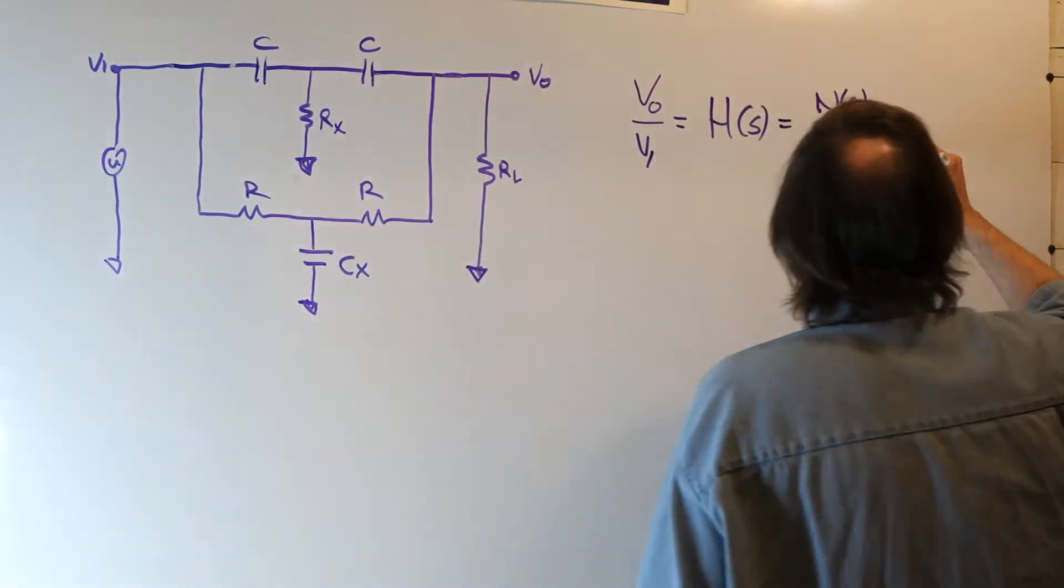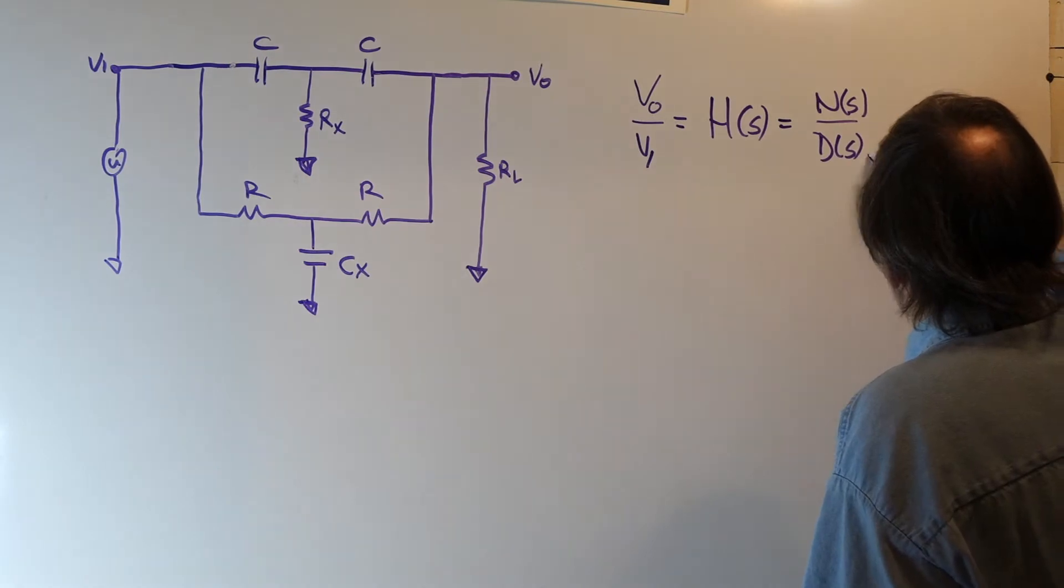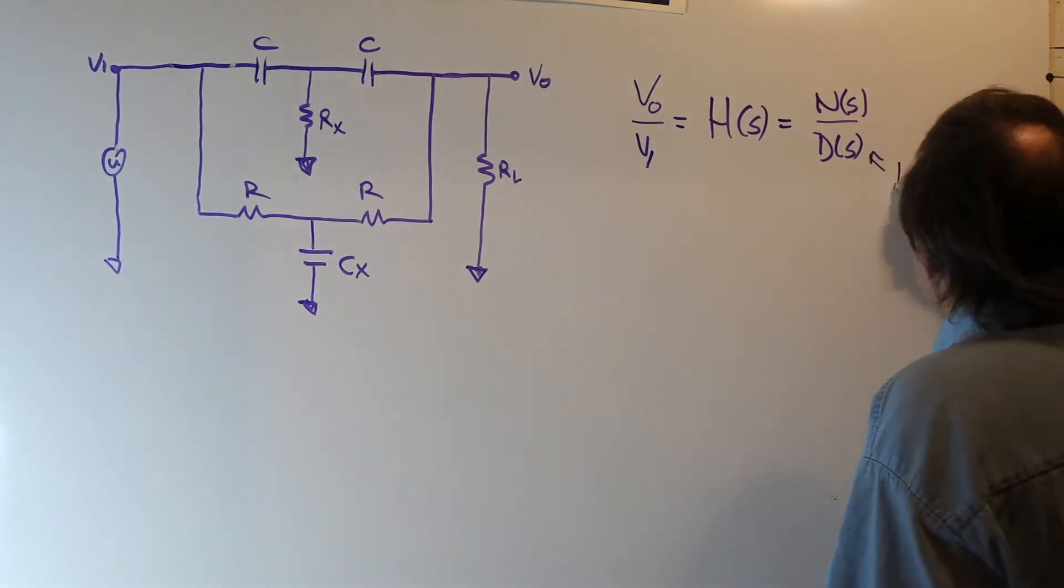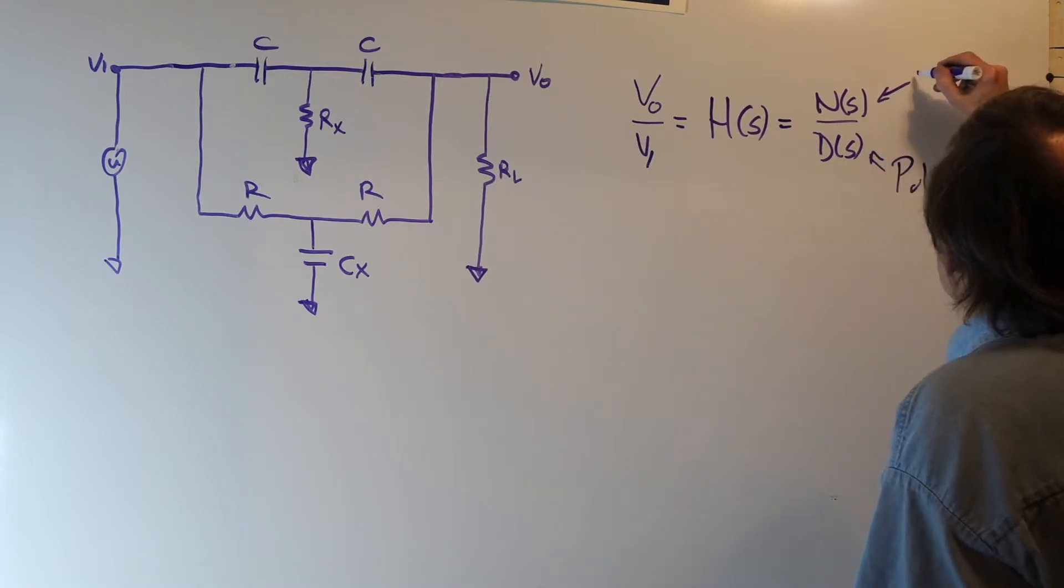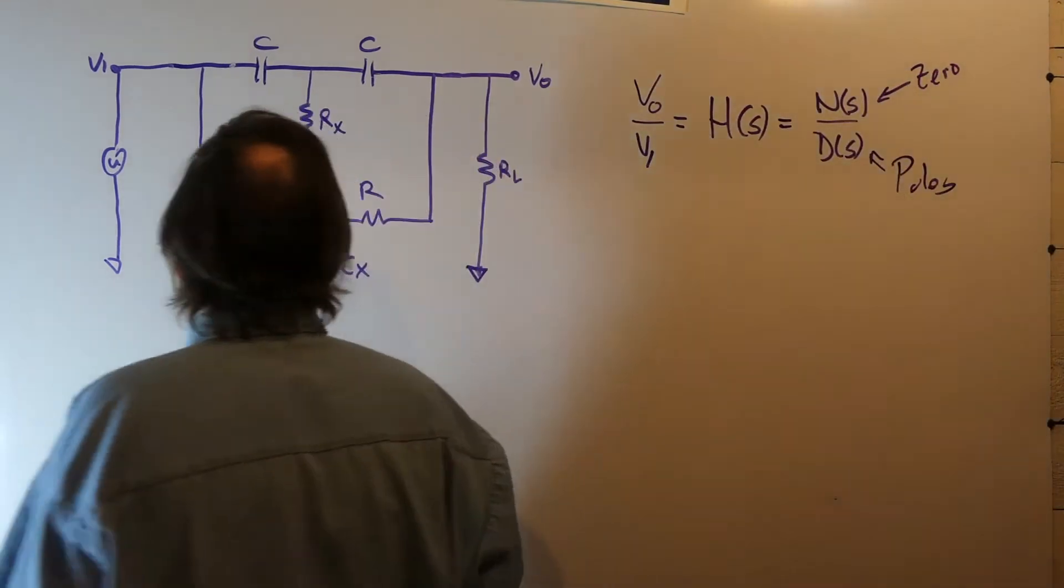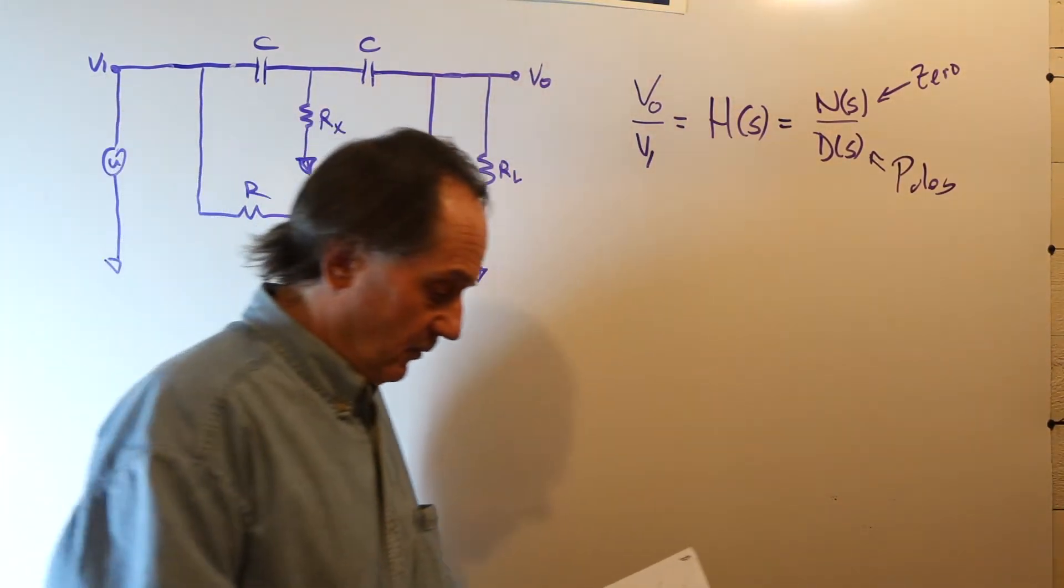The zeros or the roots of D of S are called the poles of the network. And the zeros or the roots of the numerator polynomial are called the zeros of the network.